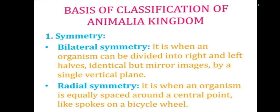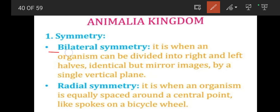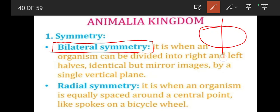We will study symmetry, specifically the subheading bilateral symmetry. Bilateral symmetry is when an organism can be divided into right and left halves that are identical but mirror images, by a single vertical plane. So bilateral means the left and right sides of the organism are identical and mirror images of each other.